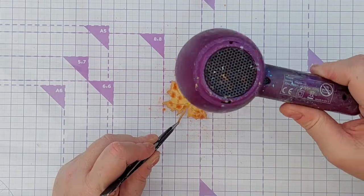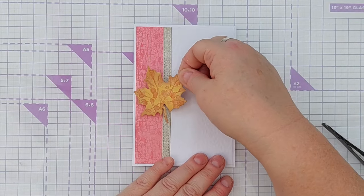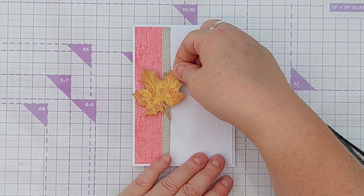Once that was dry, I put some thin craft foam on the back of my leaf and then stuck it over the gap in the stamping.